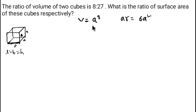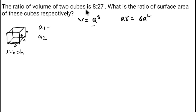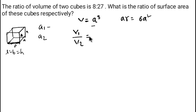Now, what is given to us? We are given that the volume of two cubes is in the ratio 8:27. Let the side of the first cube be a₁ and the side of the second cube be a₂. So volume of first over volume of second equals 8/27.